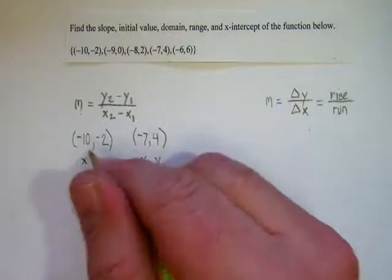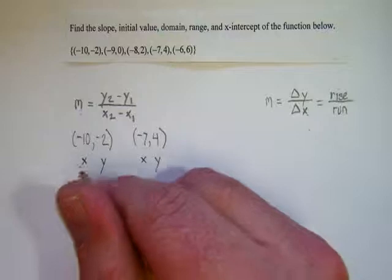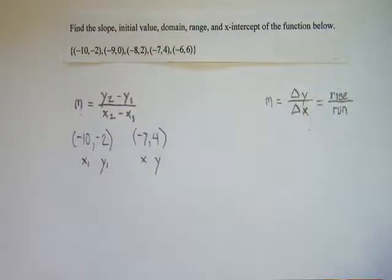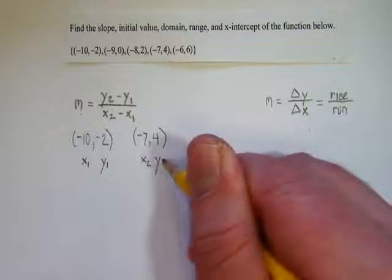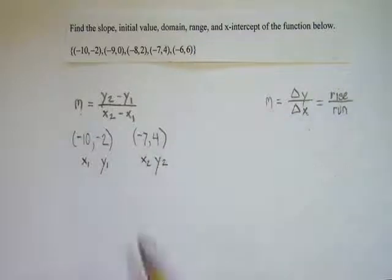And now what we do is we say that this one, I wrote it down first, so I'll call it x1, y1. And then here we'll have x2, y2. This was our first one, so both of these get a 1. This was our second one, both of those get a 2.